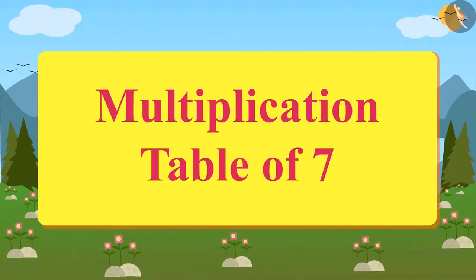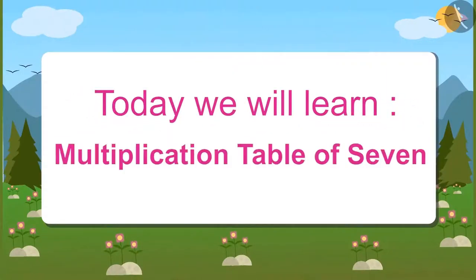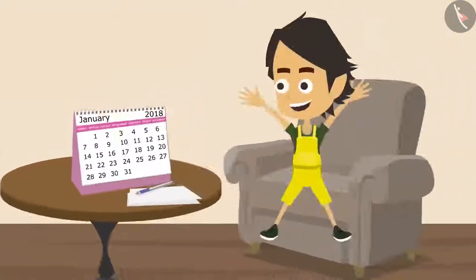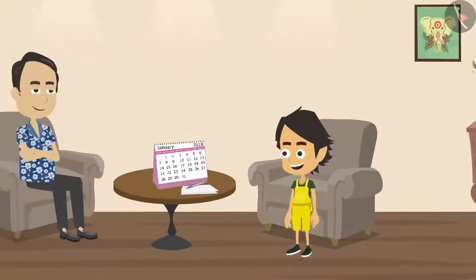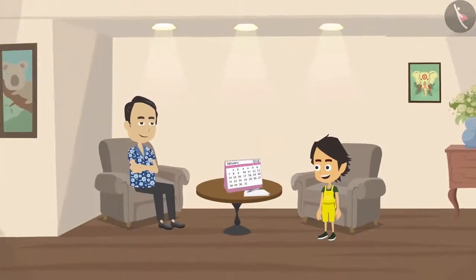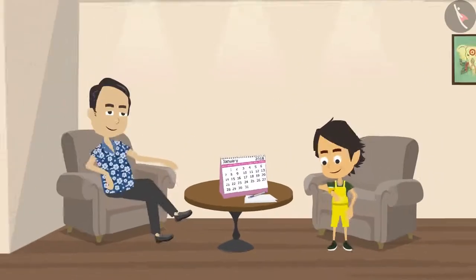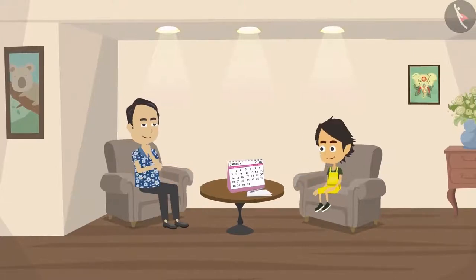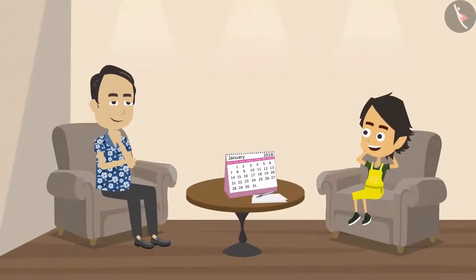Multiplication Table of 7. Today we will learn the multiplication table of 7. Today is Sunday and Ayushman is very happy because every Sunday he goes for an outing with his parents. Papa and Ayushman are ready to go out and are waiting for mummy. By the time mummy gets ready, Papa thinks of teaching something new to Ayushman.